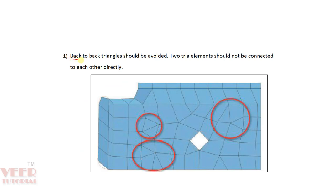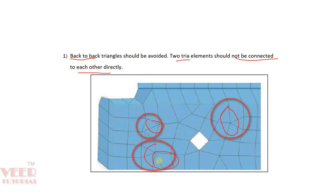We should avoid back-to-back trias, and also we should avoid clusters of trias. Here we can see there are a lot of trias — we should avoid this type of meshing. Also, two trias should not be connected to each other. Here we can see two trias are connecting, so we should avoid this type of meshing.